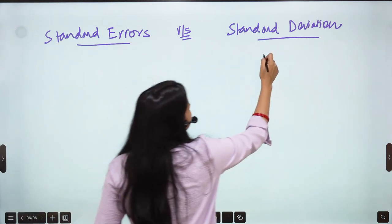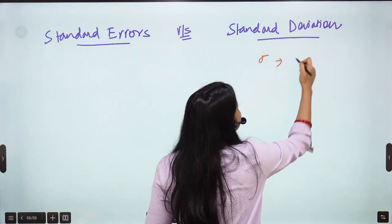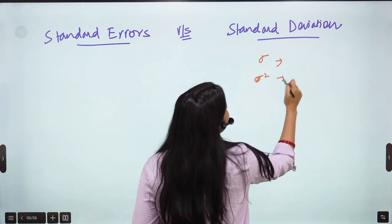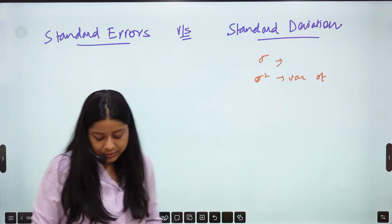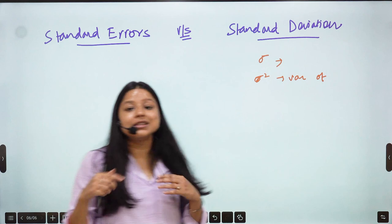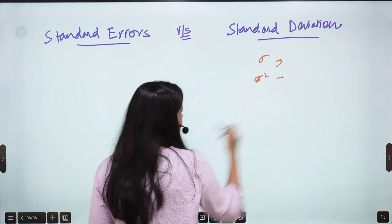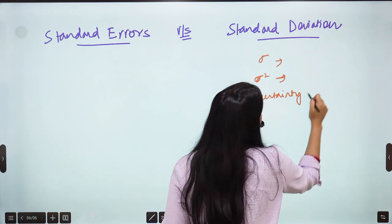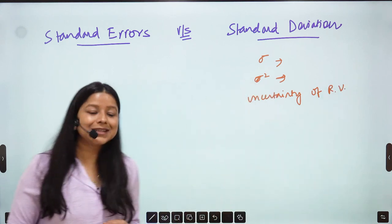Standard Deviation, just like Sigma that we calculated, is what? It's the Standard Deviation of Variance, Sigma Square. When you say this, this is variance of what? This is the uncertainty that you have, this is the uncertainty of random variables xi's.